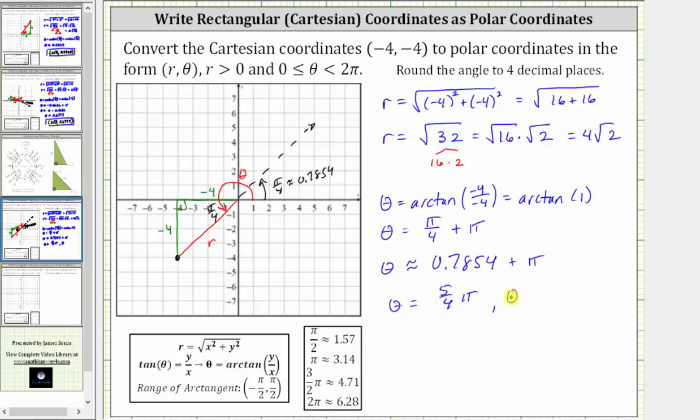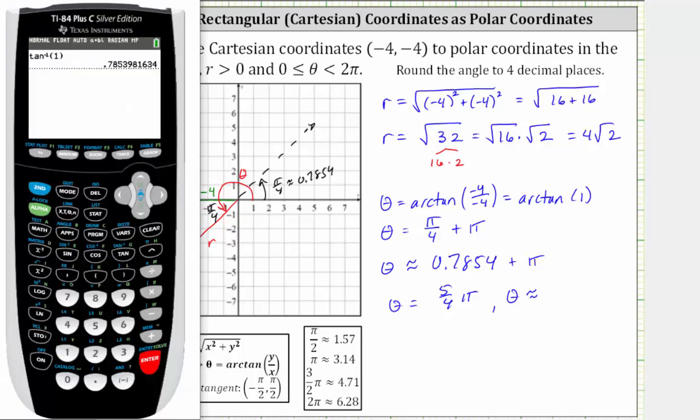or the decimal approximation, going back to the calculator, and adding pi, would be approximately 3.9270 radians.